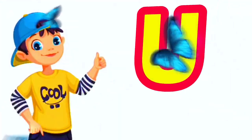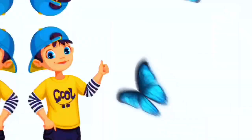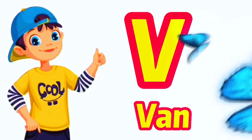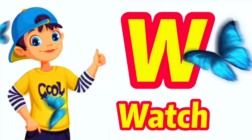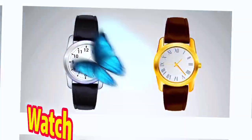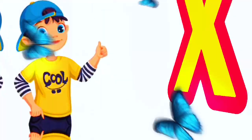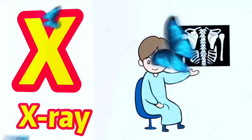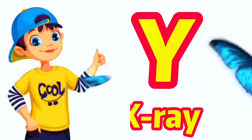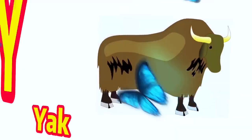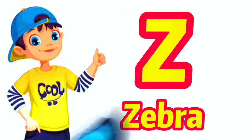U for umbrella, V for well, W for watch, X for x-ray, Y for yak, Z for zebra.